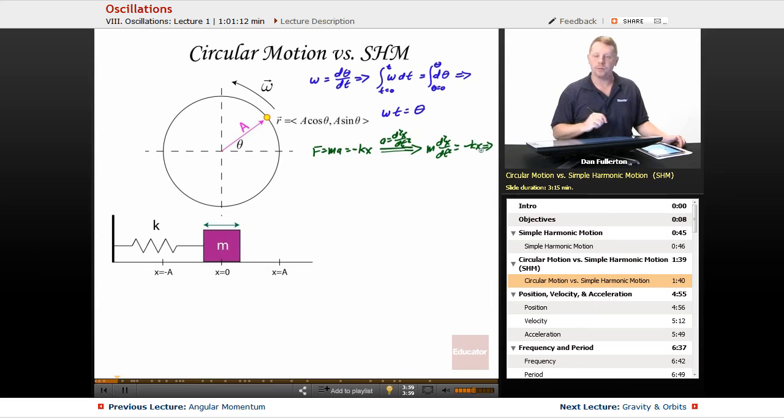Or I could write this in the more common differential equation form, d squared x over dt squared plus k over m times x must equal 0. So we have a second order differential equation where the second derivative of a function plus a constant times that function gives you 0.